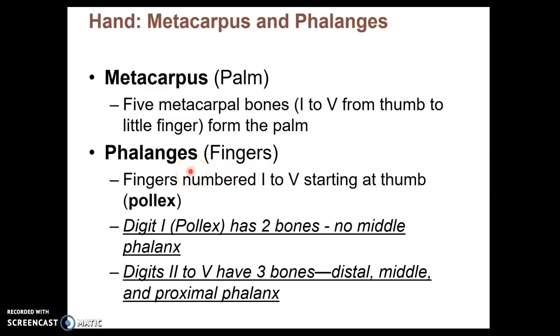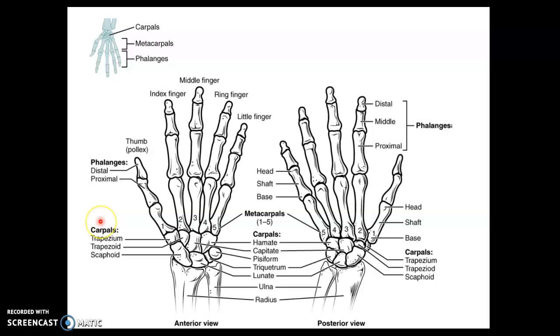Finally, at the distal end of the upper limb, we have finger bones called phalanges. Phalanx is singular for phalanges, which is plural. And we're going to look at an image to go through all of these bones in the hand that we went through.